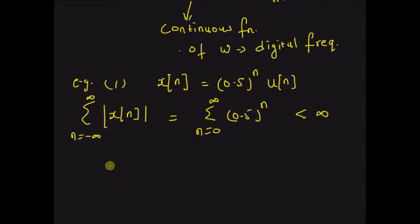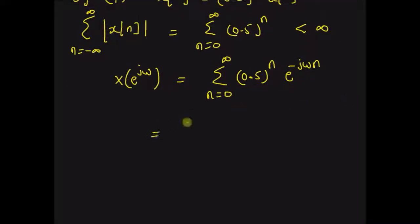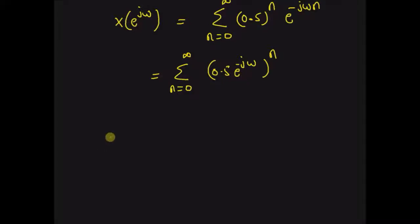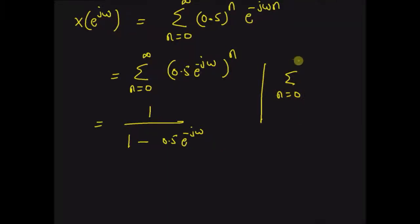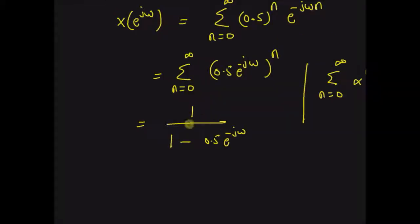Therefore, the DTFT exists and is defined as X of e to the power j omega equal to the sum from n equal to 0 to infinity of 0.5 to the power n times e to the power minus j omega n, which can be rewritten as the summation of (0.5 times e to the power minus j omega) to the power n. This is like an infinite sum with parameter alpha to the power n, and since the absolute value of alpha is less than 1, it equals 1 by (1 minus 0.5 times e to the power minus j omega), using the formula for the sum of alpha to the power n equal to 1 by (1 minus alpha).